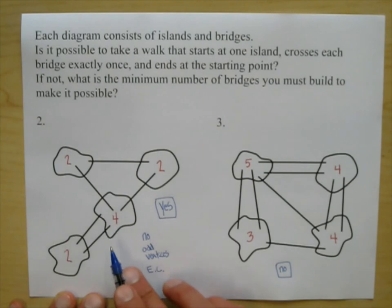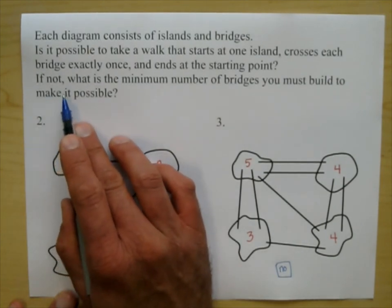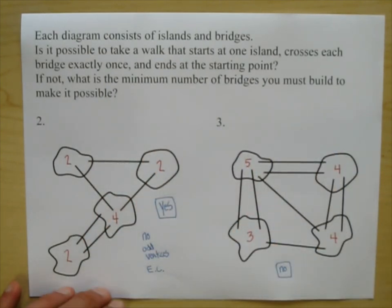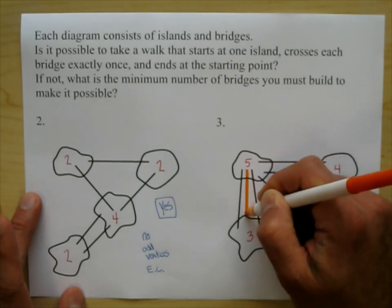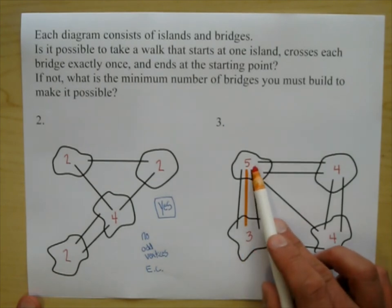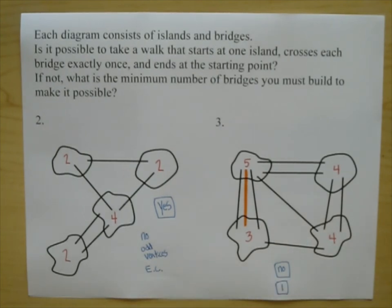Now, the follow-up question, which we didn't have to do on problem 2 because the answer was yes. But this says, if not, what is the minimum number of bridges you must build to make it possible? I mean, we could add 10 bridges to this. But the minimum number of bridges to make this possible is to add another bridge right there. Which would change this 3 into a 4 and this 5 into a 6. And so, the minimum number of bridges to add is 1. And that completes these bridge problems.